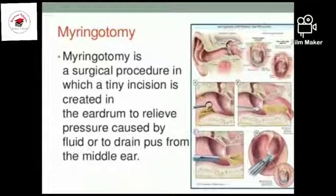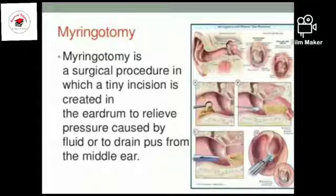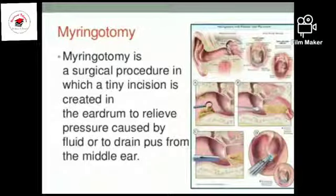The purpose of tympanostomy tubes is to restore hearing loss caused by chronic fluid buildup and to prevent delayed speech development caused by hearing loss in children. Instruments used include micro alligator forceps or any kind of suction tip, along with instilling antibiotic drops and suctioning. So here is the main management of acute otitis media.